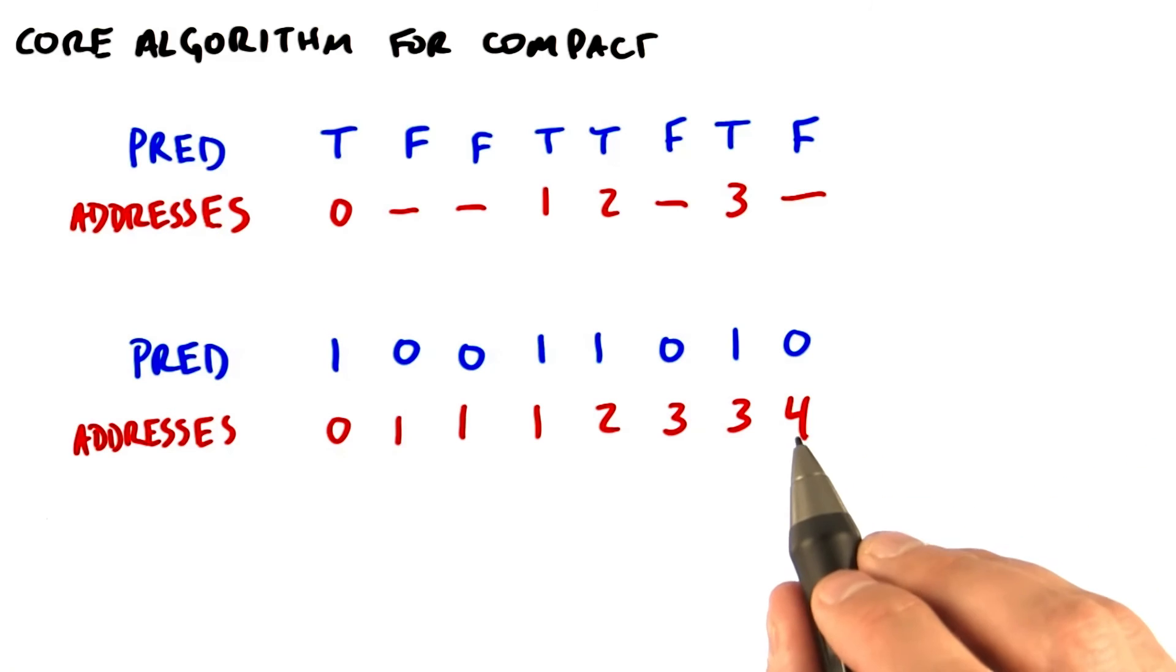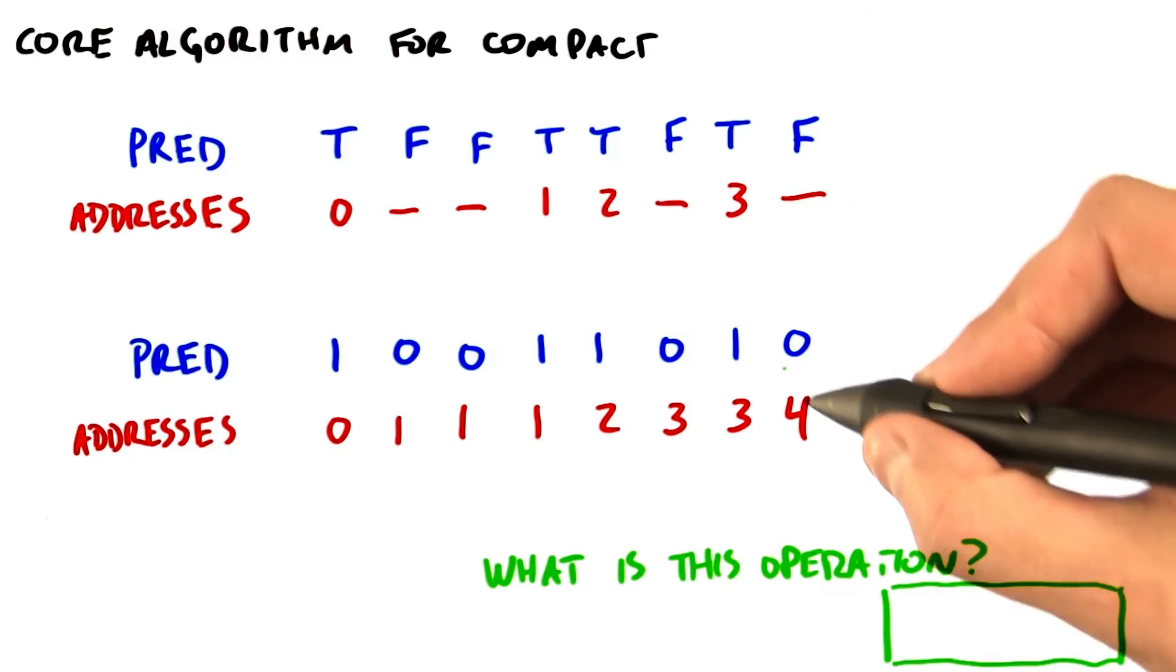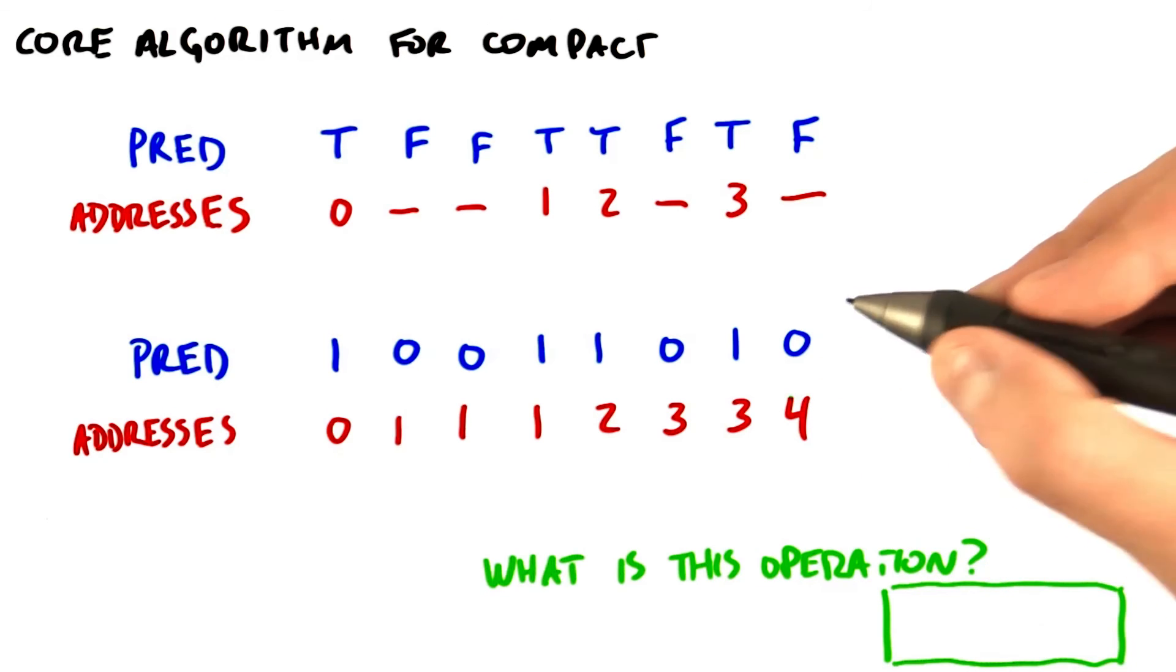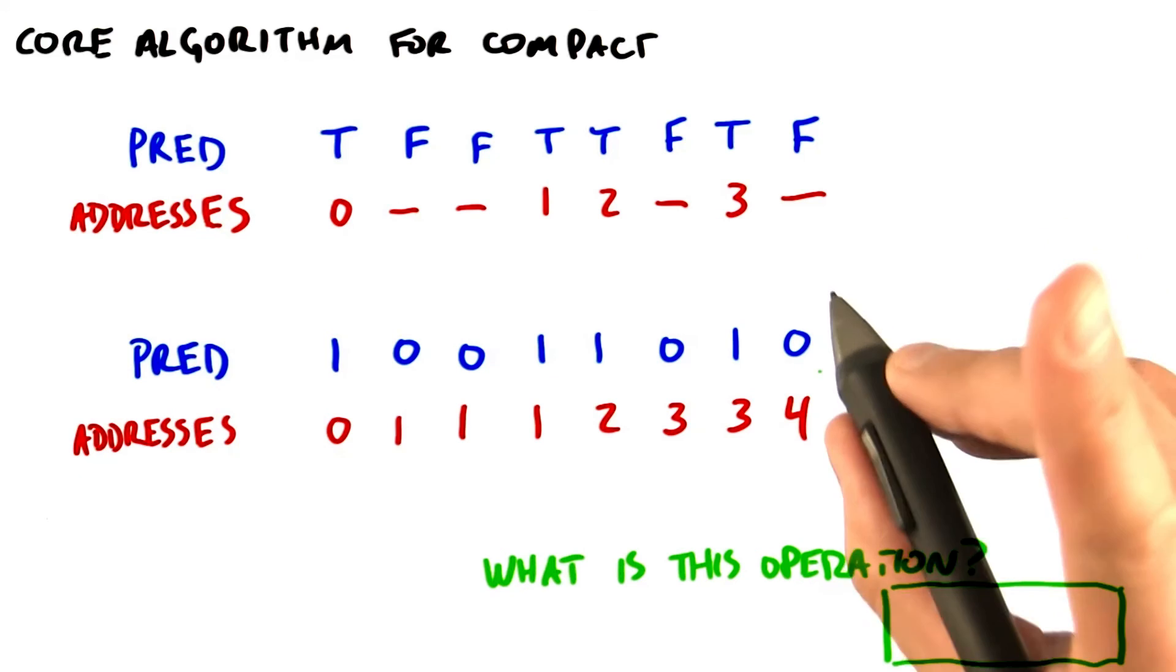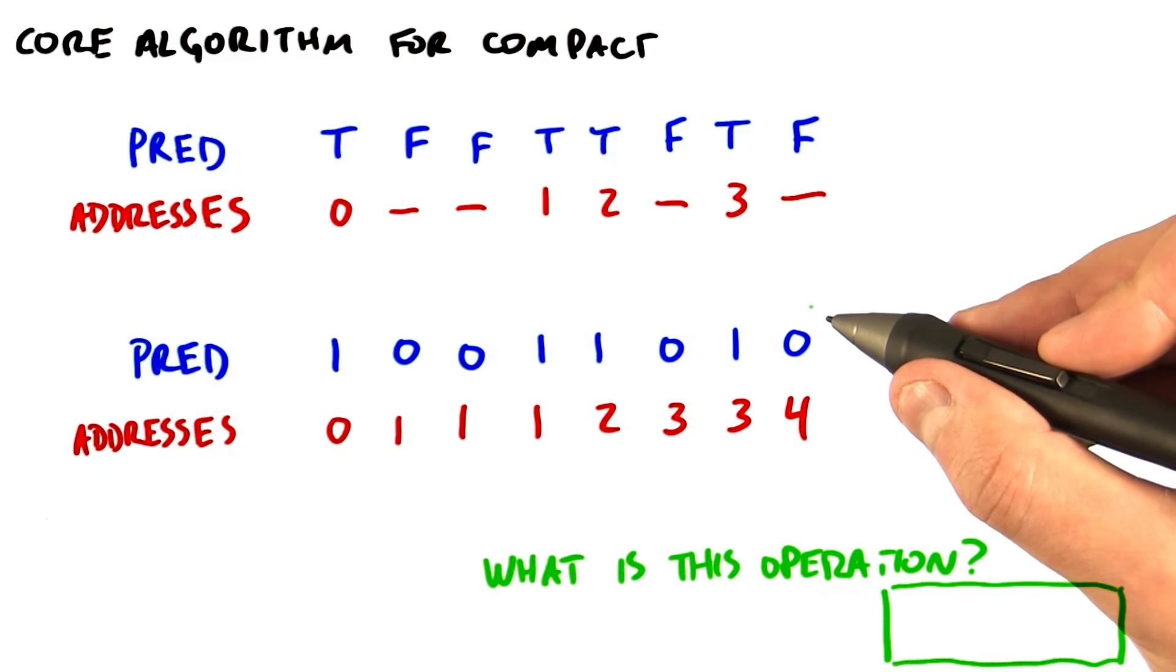And now perhaps the shortest quiz of the course. If this is the input and this is the output, what is the operation we need to do to get from this input to this output? Hint, your answer is one word of four letters.